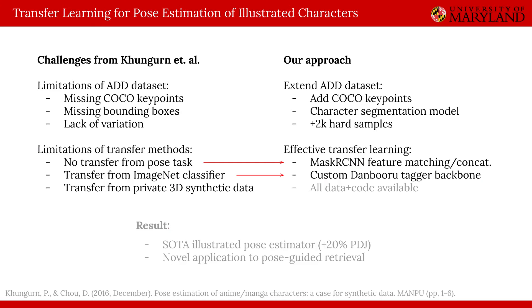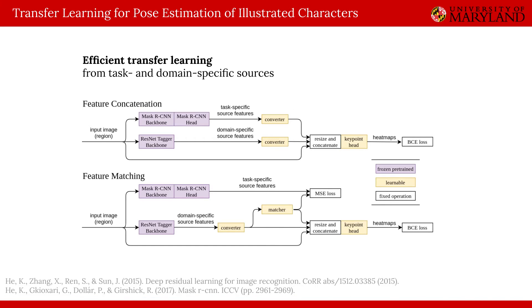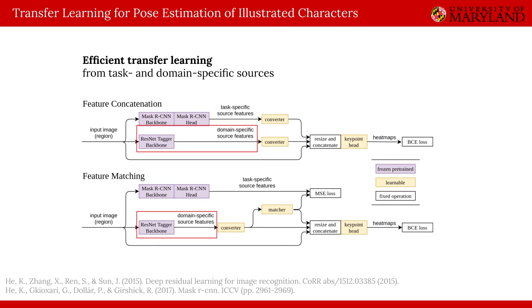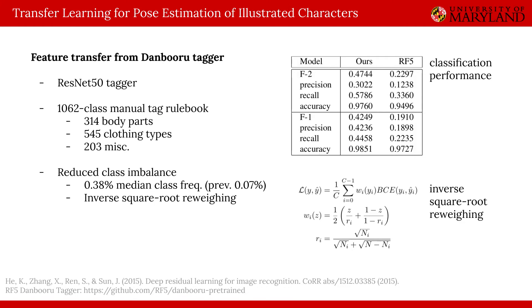Cungern et al. also do not perform transfer from another pose model, and use a feature extraction backbone trained on natural images from ImageNet. In contrast, we propose a feature concatenation architecture as well as a more efficient feature matching architecture that leverages knowledge from both a task-specific Mask R-CNN pose estimator as well as from an illustration domain-specific classification backbone. This classification backbone is a ResNet50 trained to perform multi-label classification on Danbooru illustration tags. Instead of using available Danbooru taggers like RF5, which were naively trained on a long-tail distribution of tags, we train on a new 1062-class rulebook of manually filtered relevant tags, and use inverse square root loss re-weighting to stabilize training. The drastically reduced class imbalance results in state-of-the-art classification performance and also provides a significant boost to pose estimation performance.